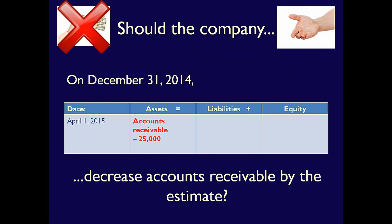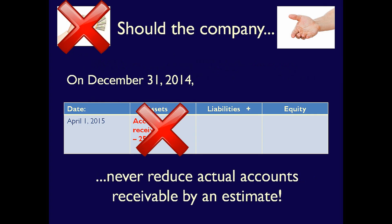You might say that ABC Company should decrease their accounts receivable by $25,000. But you would be wrong. We don't know which customers will go bad, so we can't put our estimate against actual customer amounts. When we make an estimate, we can't touch the accounts receivable account.